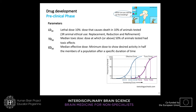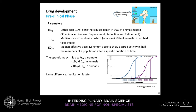Important preclinical parameters include: the lethal dose 10% (LD10) — the dose causing death in 10% of animals tested (formerly LD50, now guided by the 3Rs of replacement, reduction, and refinement of animal testing); the median toxic dose (TD50) — the dose at which more than 50% of animals show toxic effects; and the ED50 or median effective dose — the minimum dose showing desired activity in half the population after a specified time. These parameters define the therapeutic index of a drug — the farther apart the toxic and effective dose curves, the safer the medication.